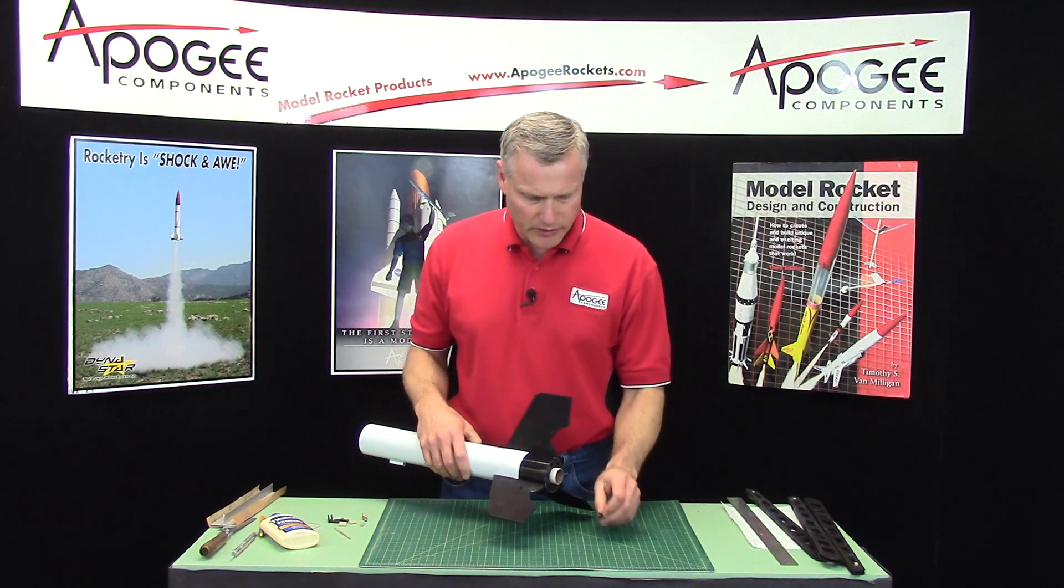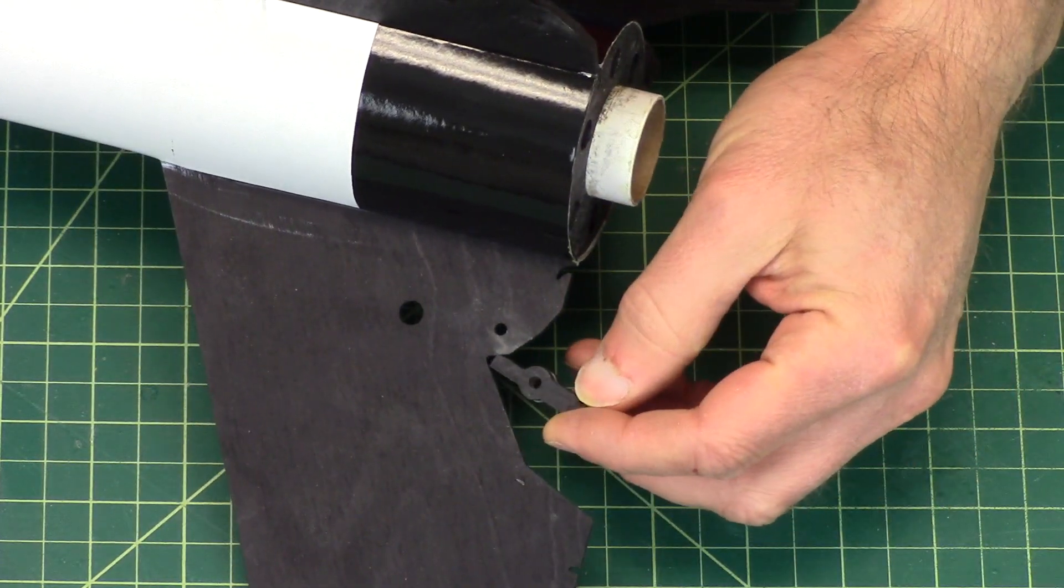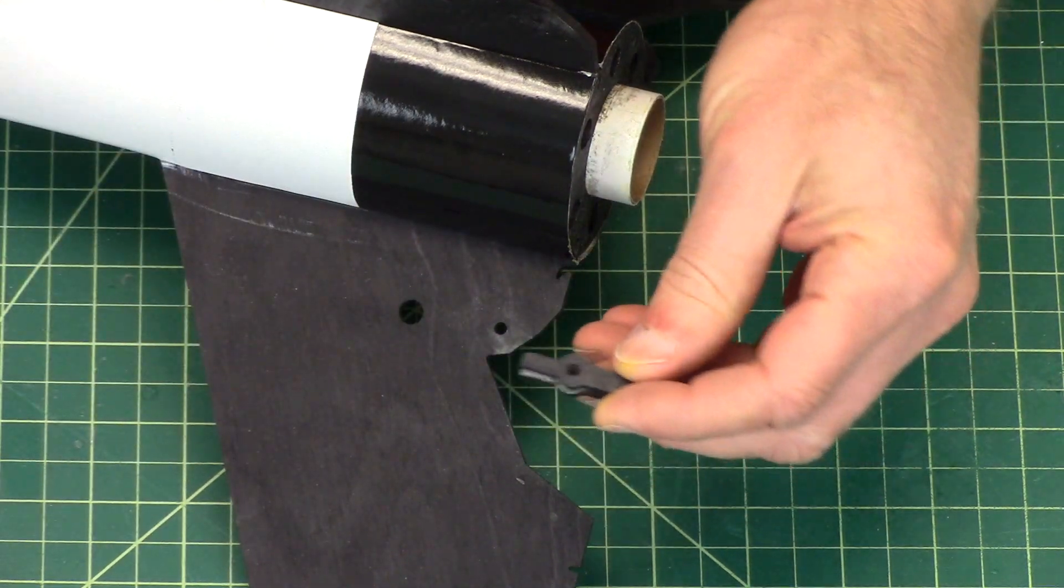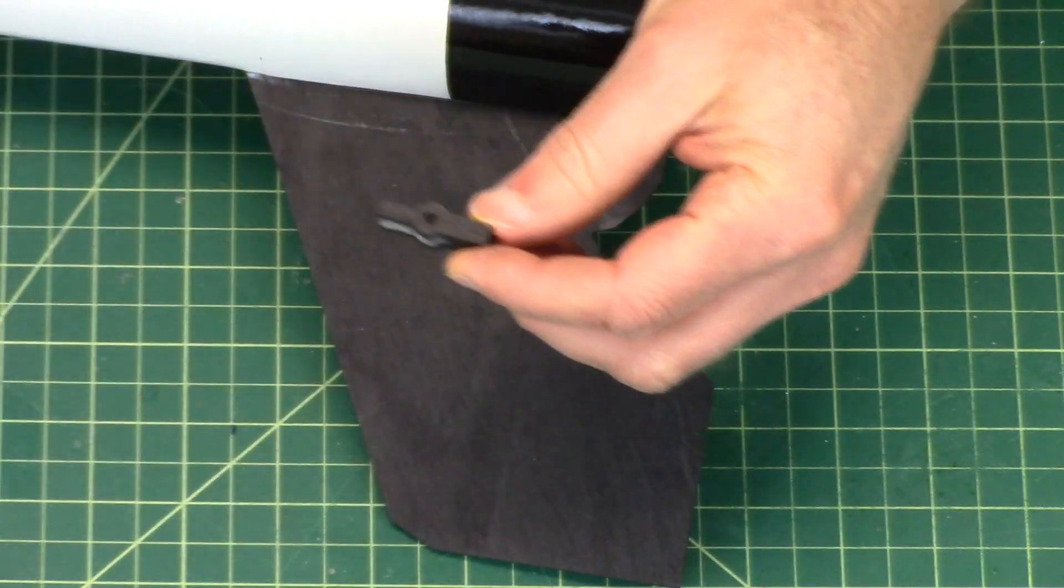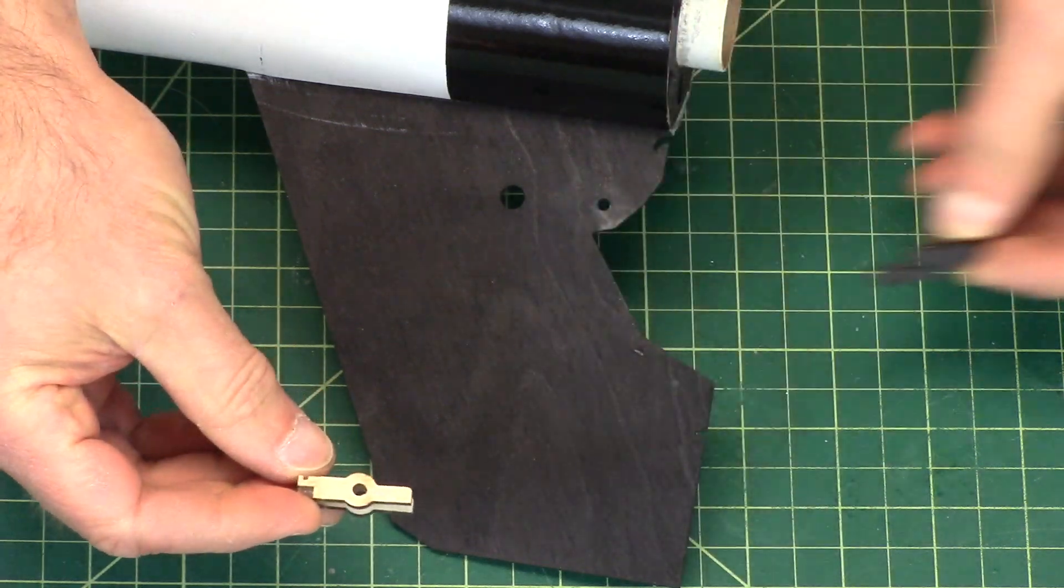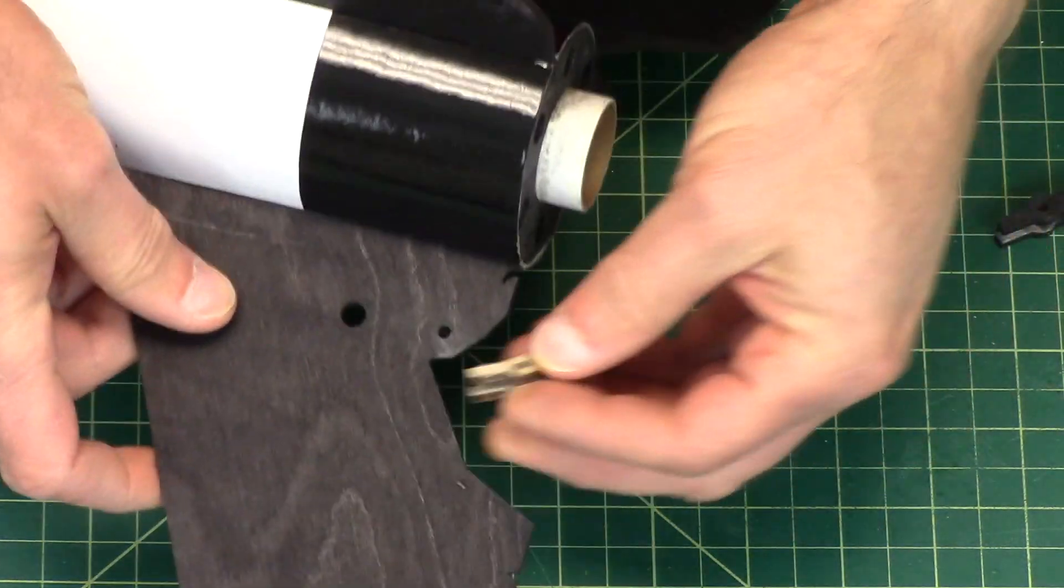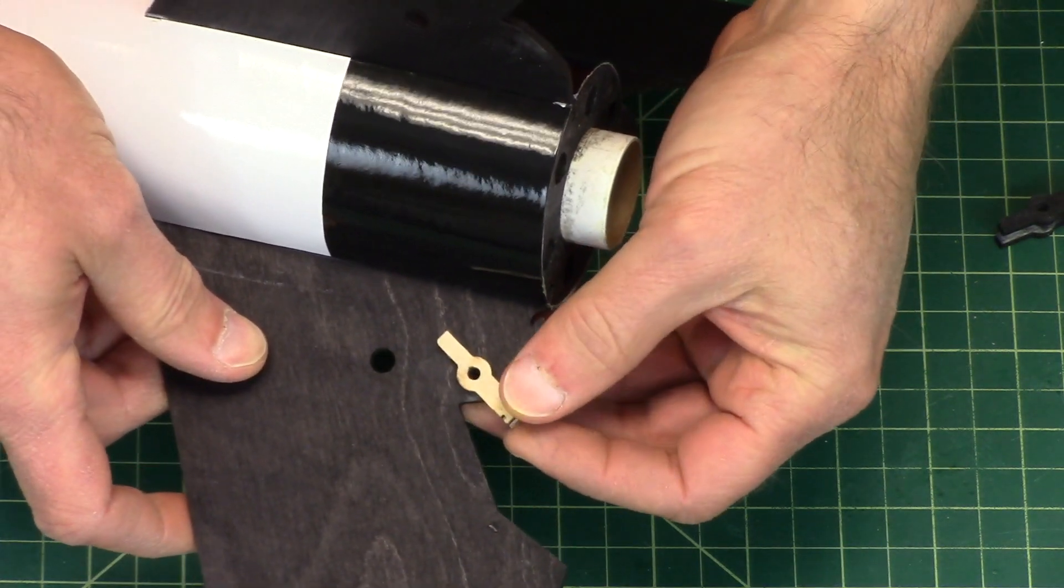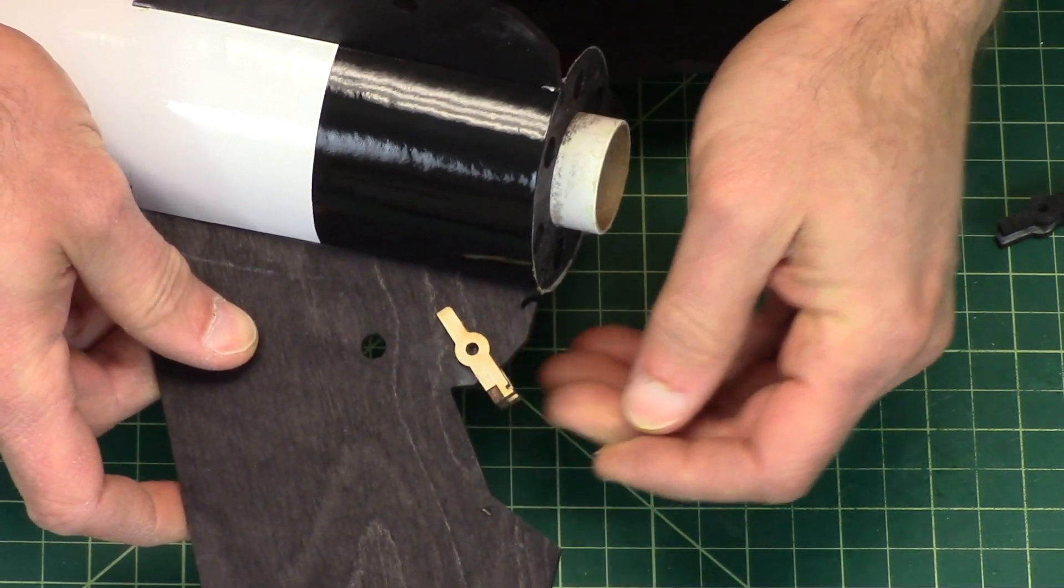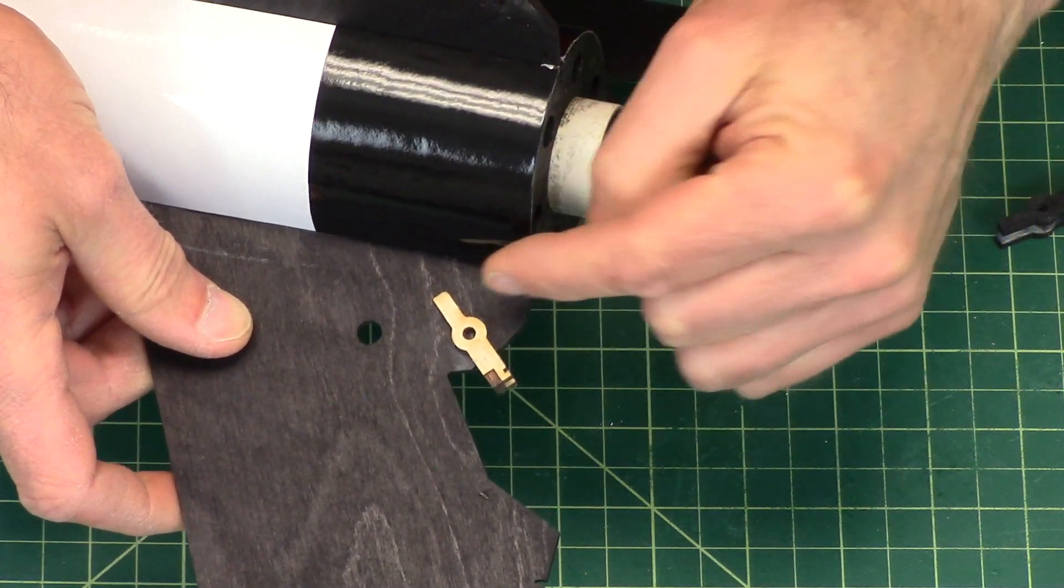In this next step we're going to put on the little latches that go on to the fins. Since this is hard to see, I got a latch here that's not been stained. The latch can go on either two ways - it could go on this way or this way. One way is correct, one way is not.